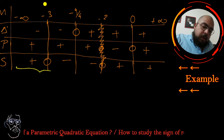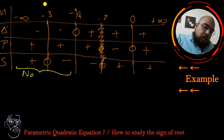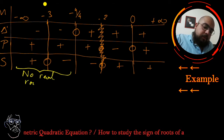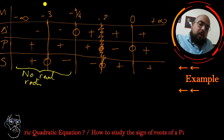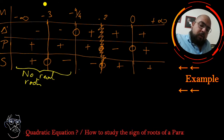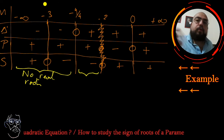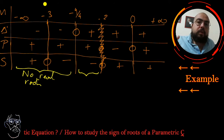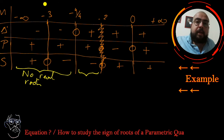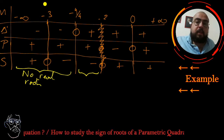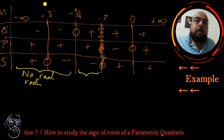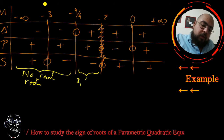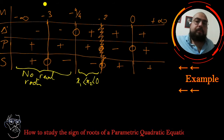When delta prime is negative, I simply say no real roots — it doesn't matter the sign of the product or the sum. When delta prime is positive with two real distinct roots, and the product is positive, both roots have the same sign. If the sum is negative, both roots are negative, so: x1 < x2 < 0.